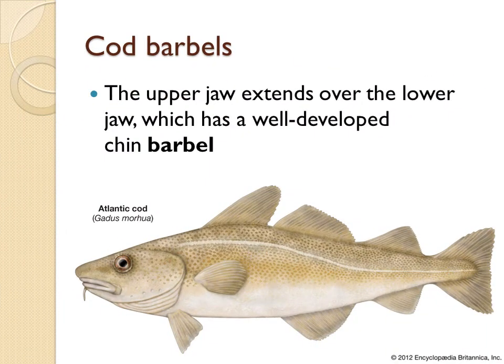In this slide you can see the image of a cod fish, which has a barbel that extends over the lower jaw and has a well-developed chin barbel. The two most common species of cod are the Atlantic cod, which lives in the colder waters and deeper sea regions throughout the North Atlantic, and the Pacific cod, which is found in both eastern and western regions of the Northern Pacific.